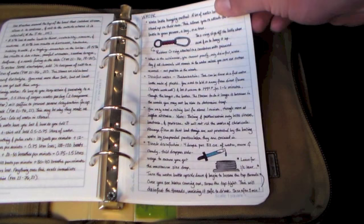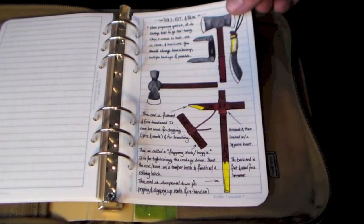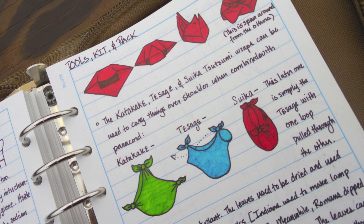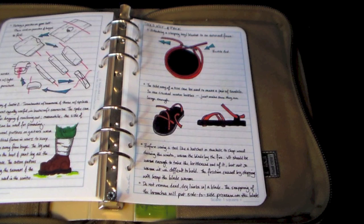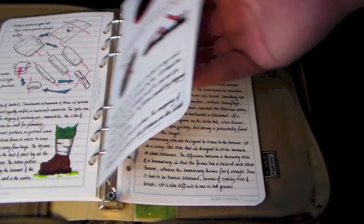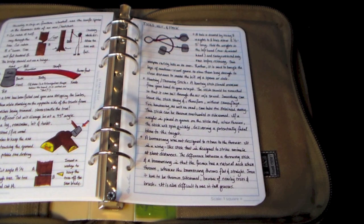Next I have a section on tools, kit, and pack. And this is where I record for instance what I would keep in a pack, exactly how to stuff my backpack, just basic notes on kit. I also have some notes here on how to make certain elements of kit in an emergency situation. So for instance I have a note here on how to make sandals, how to make shoes. I also have notes on how to repair axes, how to use an axe to cut down a tree, how to make weapons, things of that nature.